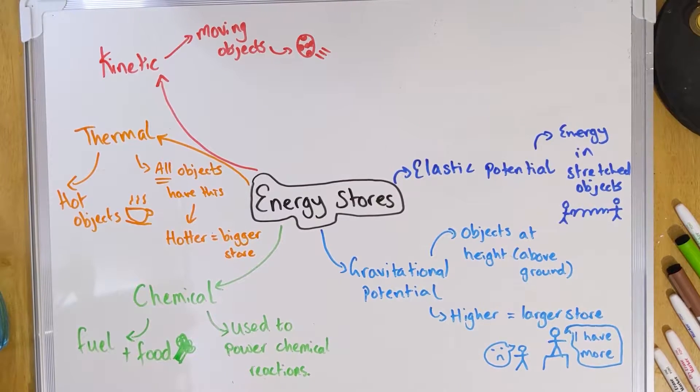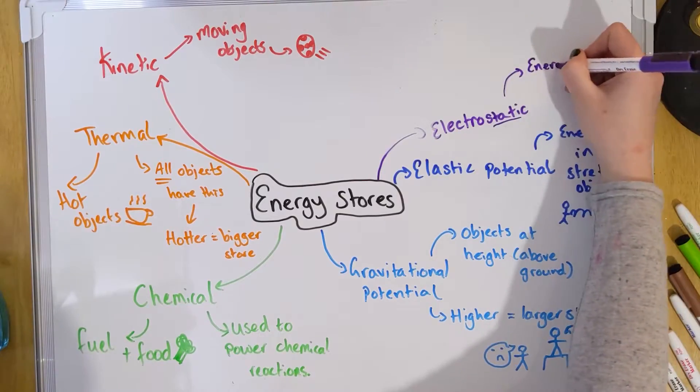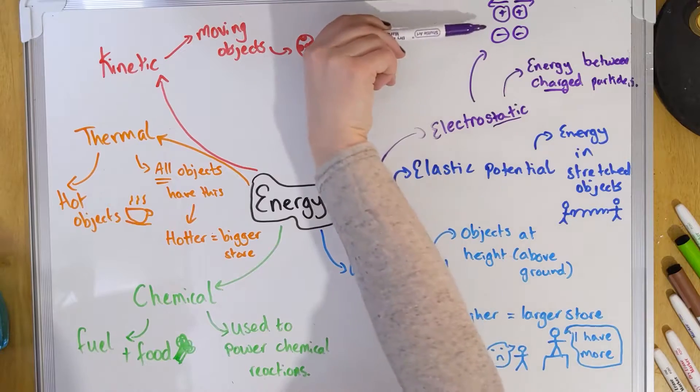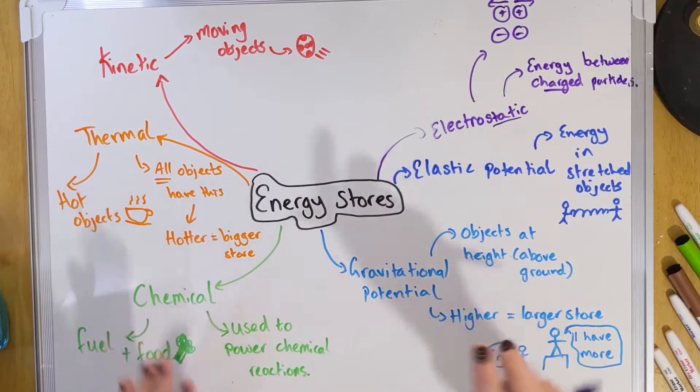Our next store is electrostatic energy. If you think of static, that might be where your hair is standing on end, or where you give someone an electric shock after shuffling across a carpeted floor. It's to do with the energy between electrons in an atom, or the energy between charges. You get a positive and a negative charge — if they are like charges they'll repel and push away, and if they're opposite charges they'll come together. So two positives or two negatives repel, and opposite charges attract — opposites attract.